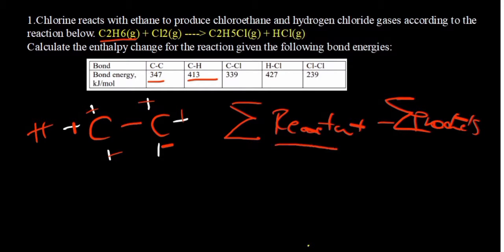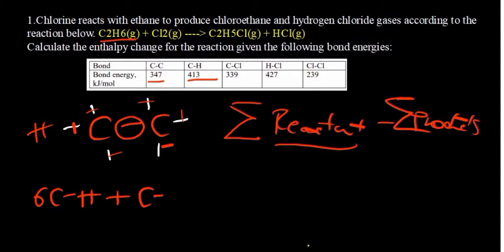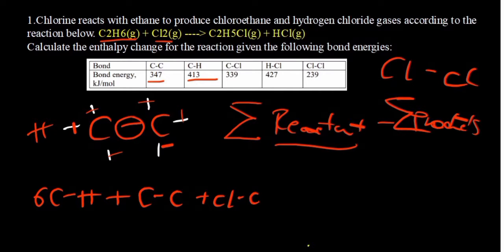So what reactants do we have? We have C2H6 and I've drawn the Lewis structure. We've determined that there are six carbon to hydrogen bonds, plus we also have a carbon to carbon bond — and it's only one. Then what else do we have on the reactants? We have chlorine which exists diatomically, so we only have a single chlorine to chlorine bond.